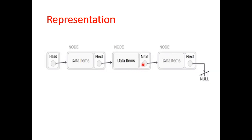The second node's next pointer stores the address of the third node. The third node's next pointer would store the address of a fourth node, but since no fourth node is available, the third node's next pointer holds null. Whenever you create a memory block, a node is created and linked into this linked representation.